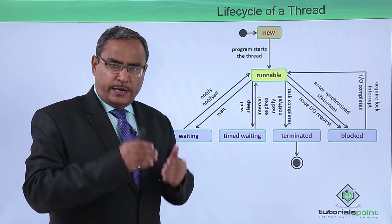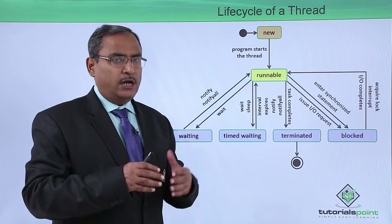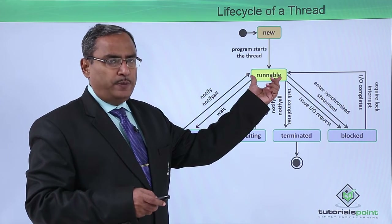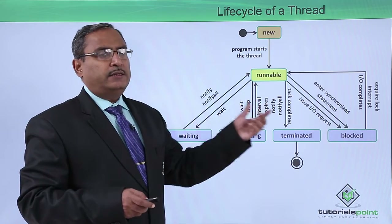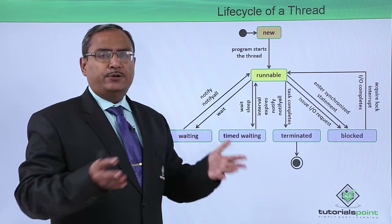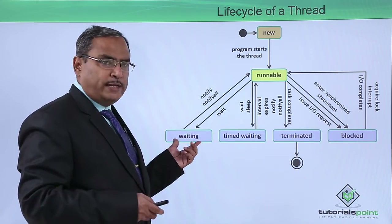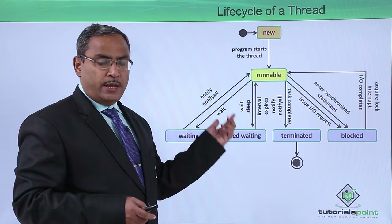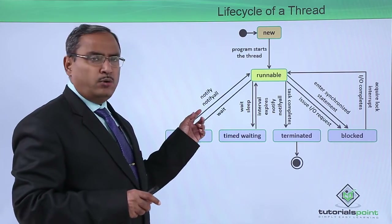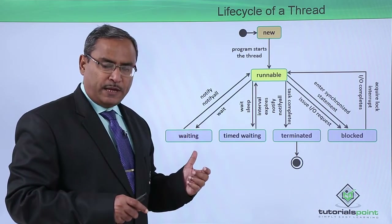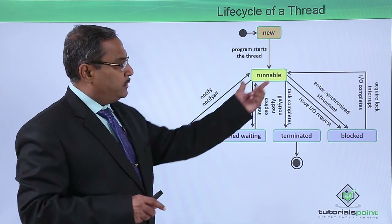In the runnable state, the thread is supposed to perform its intended task, which will be executed when the thread is in the runnable state. The thread may get suspended due to the presence of some higher priority thread in the system, so it will be found in the waiting state through a wait call. When that constraint is waived, through notify or notifyAll, the state transition will take place from the waiting state back to the runnable state.